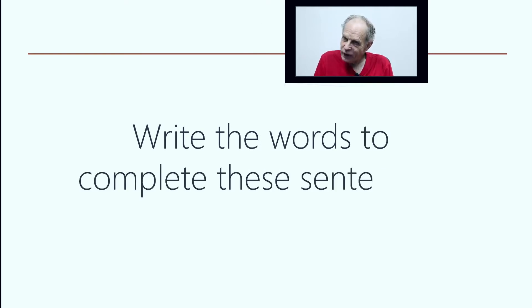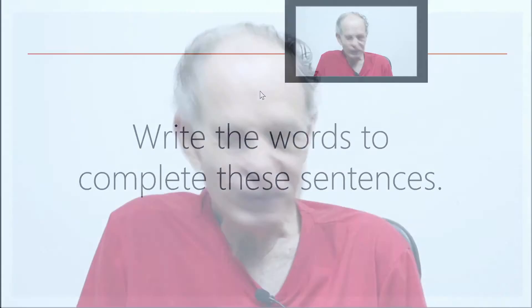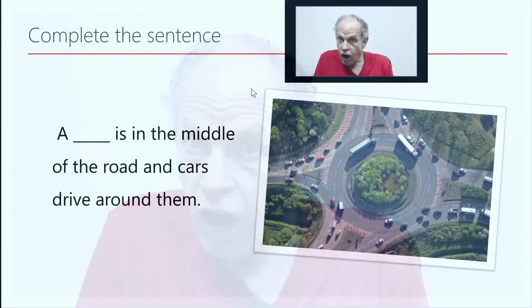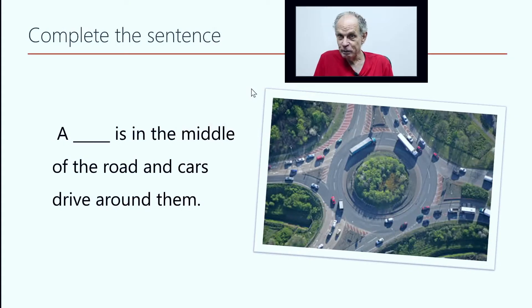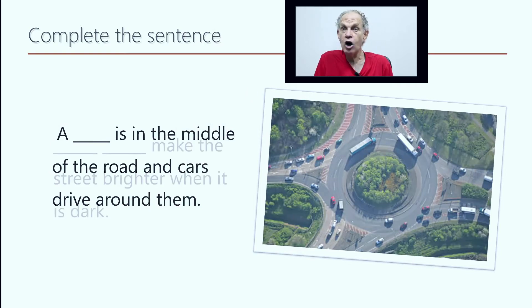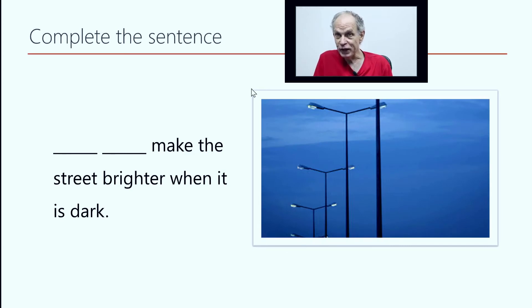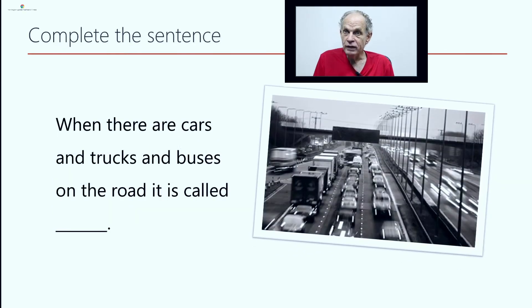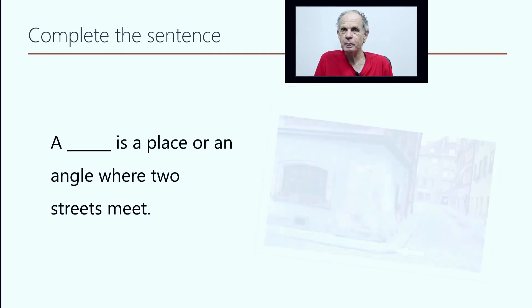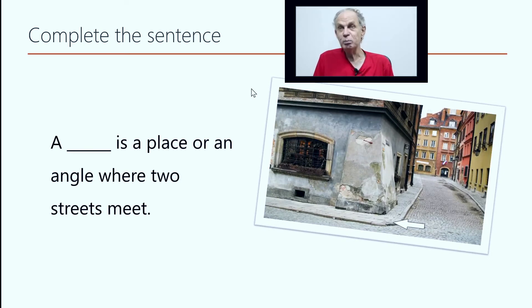Okay, write the words to complete these sentences. Street lights make the street brighter when it is dark. When there are cars and trucks and buses on the road, it is called... A corner is a place or an angle where two streets meet.